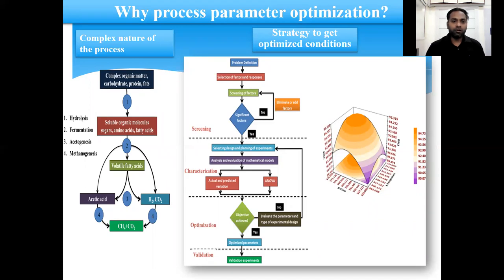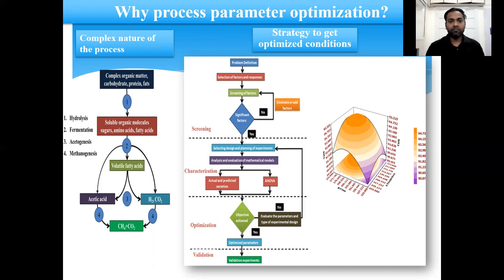So why do we need process parameter optimization? As we know, these are the parameters involved in the process and the nature of the process is also complex. For example, in case of the biomethanization process, different steps are involved such as hydrolysis, fermentation, acetogenesis, and methanogenesis. So in addition to process factors, operating factors, modifier factors, and different fermentation strategies, which also may have influence on the process, this process becomes more complex and we need process parameter optimization.